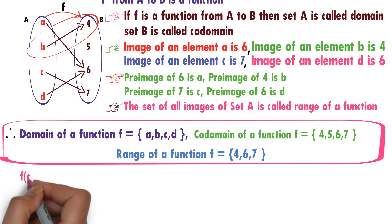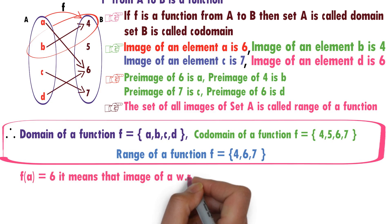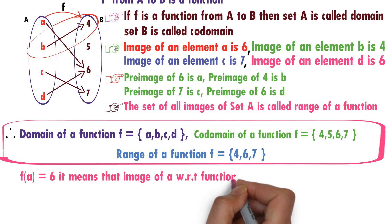We often write like this: F of a equals 6. It means that image of a with respect to F is 6.